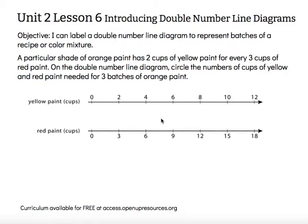A particular shade of orange paint has two cups of yellow paint for every three cups of red paint. On the double number line diagram, circle the numbers of cups of yellow paint and red paint needed for three batches of this orange paint.